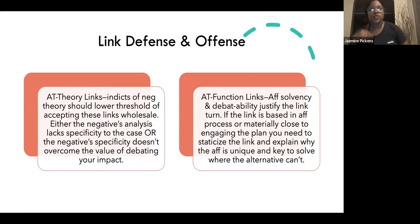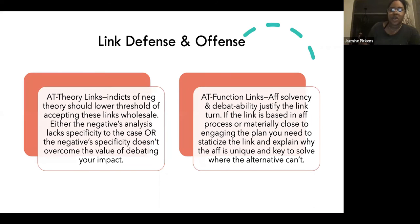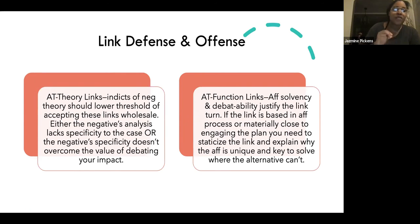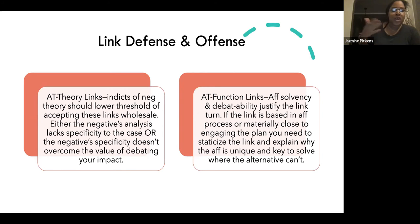For functional links — more about implementation or materially close to the 1AC — AF solvency and debatability justify the link turn. If the link is based in the AF process or materially close to engaging the plan, you need to take a stance on the link and explain why the AF is unique and key to solving. You need a departure: why is what they're critiquing not true of the affirmative, and where is the affirmative different? Why is the debatability of having this discussion important to justify why the plan is good?